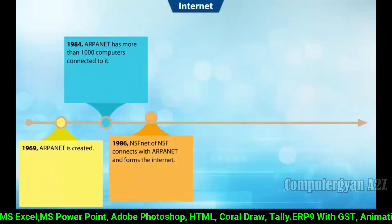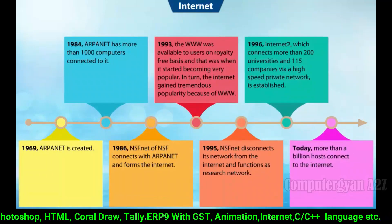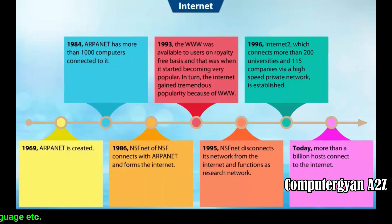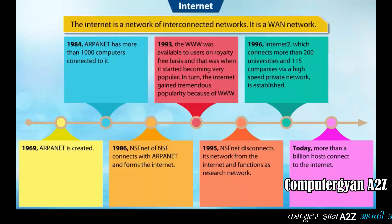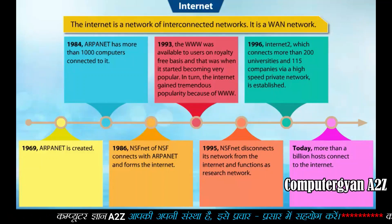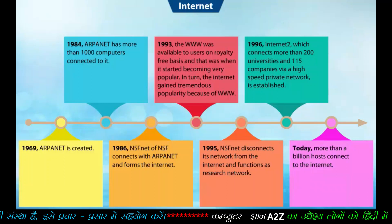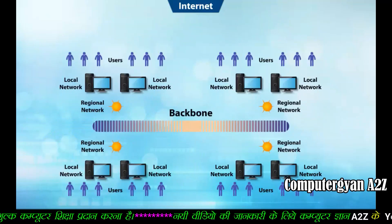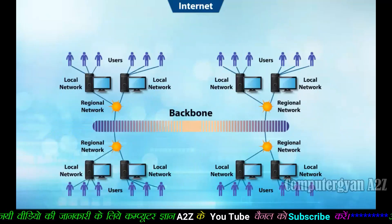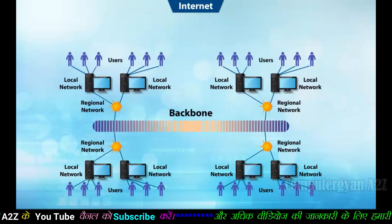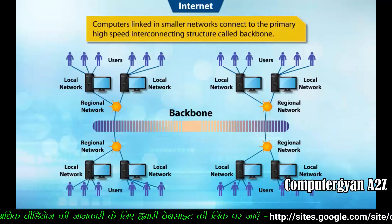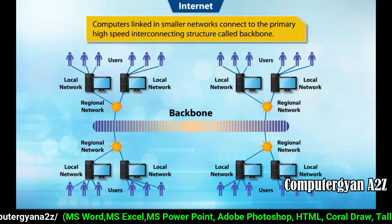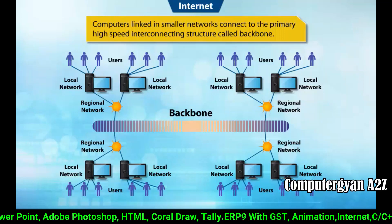The internet was created by the Defense Advanced Research Projects Agency (DARPA) and the US Department of Defense for scientific and military communications. The internet is a network of interconnected networks — it is a WAN. Computers in the internet are not directly connected to one another; instead, computers in smaller networks are connected to a primary high-speed interconnecting structure called the backbone, which enables a user on any network to exchange data with any other user.